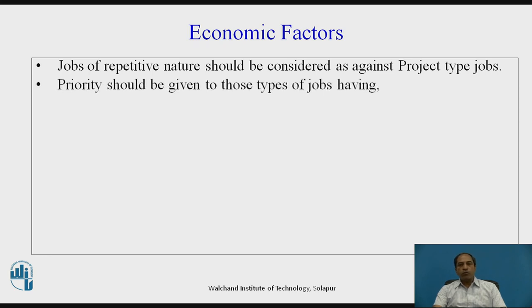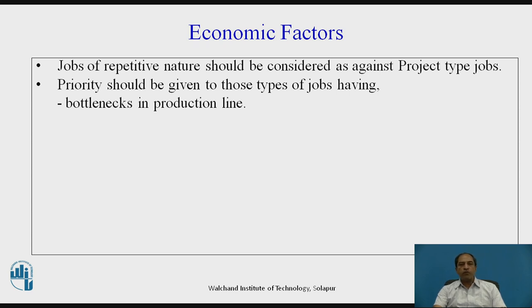Priority should be given to jobs having a bottleneck in the production line. The simple way to identify a bottleneck is to take a round — there will be some jobs waiting on a particular machine, and you will find a lot of WIP inventory on that machine. That appears to be the bottleneck. If you carry out a major study on the bottleneck, naturally it will improve productivity, improve production flow, and remove the bottleneck of the entire production line.